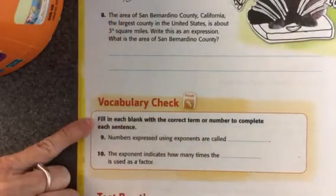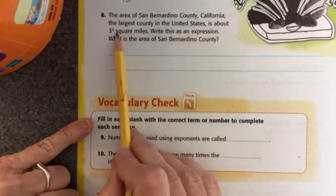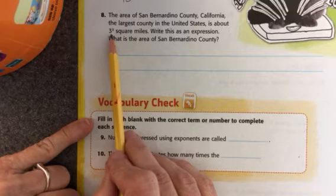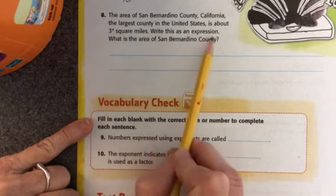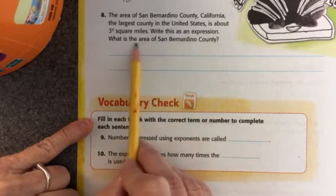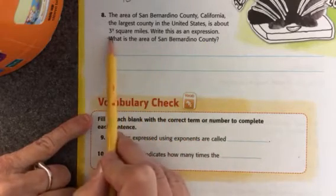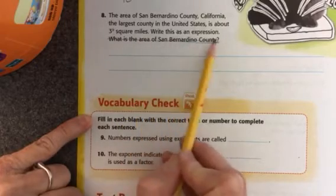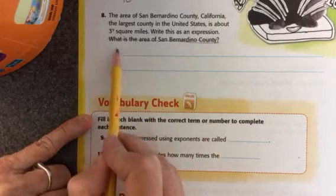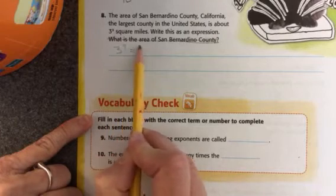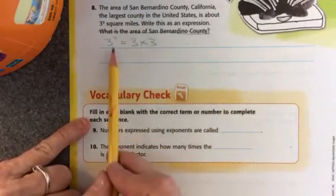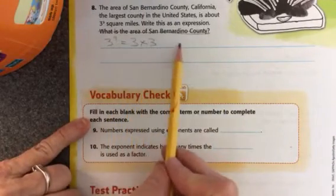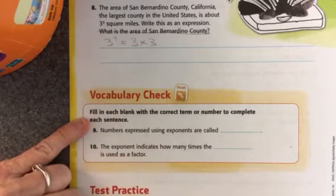Let's move on to number eight. The area of San Bernardino County, California, the largest county in the United States, is about three to the ninth power square miles. Write this as an expression. What is the area of San Bernardino County? You don't need to do this part, but you do need to write it as an expression. So three to the ninth power is going to be the same as 3 times 3 and continue on. If you want to go ahead and do 3 times 3 times 3 times 3 nine times to find out the answer, that would be awesome. That would be like bonus for you. Very cool.